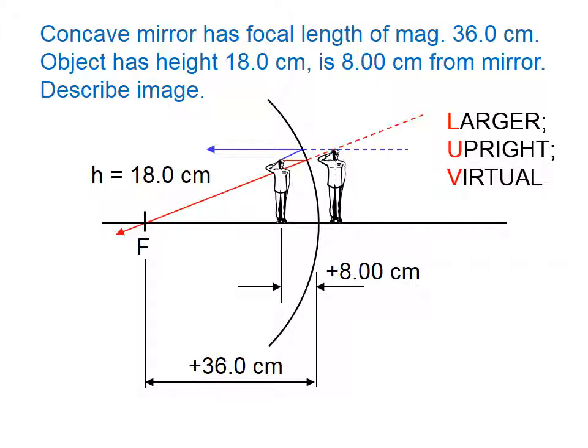Any time you have an object that's in front of the focal point, you're going to get a larger, upright, virtual image. Those are the numbers that we can calculate using our equations.